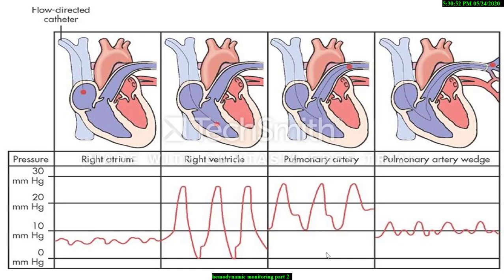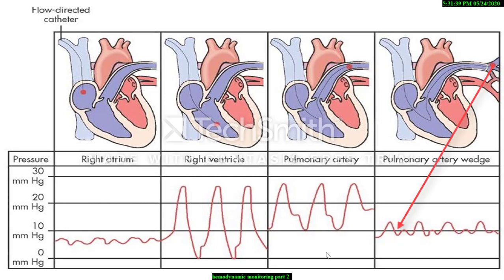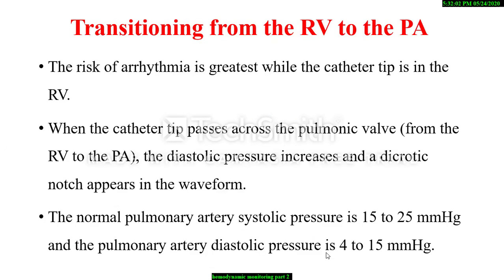This is the graphical representation of the transition of the pulmonary artery catheter and the respective changes in waveform. When the catheter reaches the right atrium, the waveform is like the central venous pressure. When the catheter reaches the right ventricle, the waveform changes and systolic blood pressure increases. When the catheter enters the pulmonary artery, the waveform changes, diastolic blood pressure increases, and the dicrotic notch appears. When the balloon wedges the pulmonary artery, the waveform changes and pressure drops, again resembling the right atrial waveform but at a slightly higher pressure because it represents left atrial pressure. The risk of arrhythmia is greater while the catheter tip is in the right ventricle; thus the catheter should be advanced from the right ventricle to the pulmonary artery without delay. When the catheter tip passes across the pulmonic valve, the diastolic pressure increases and a dicrotic notch appears in the waveform.